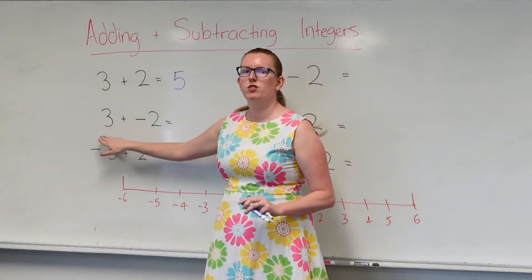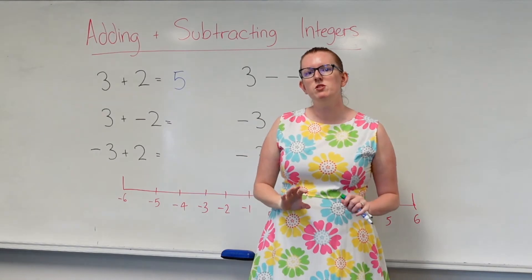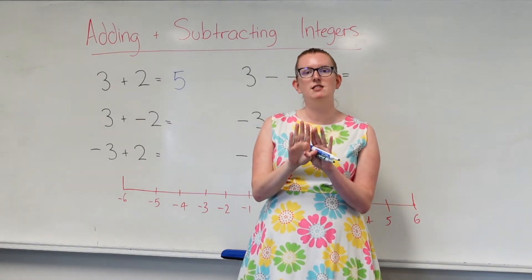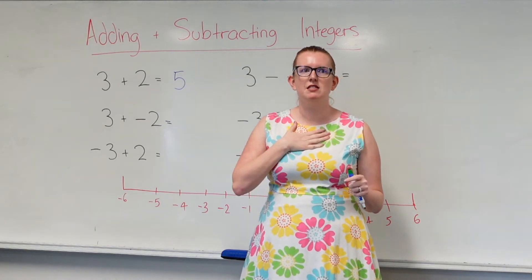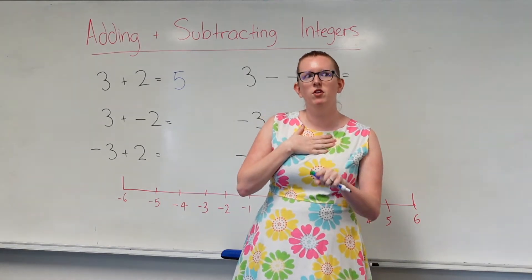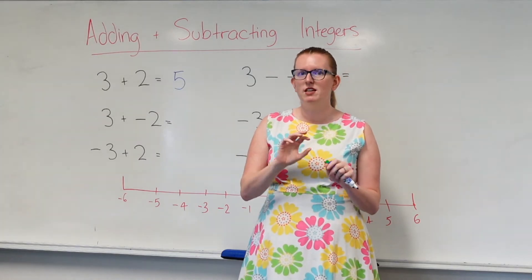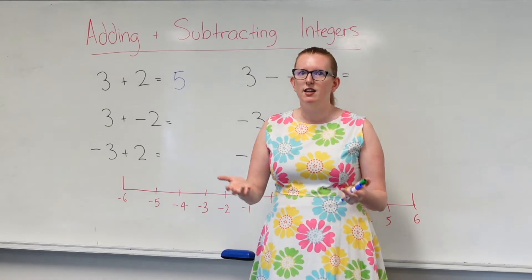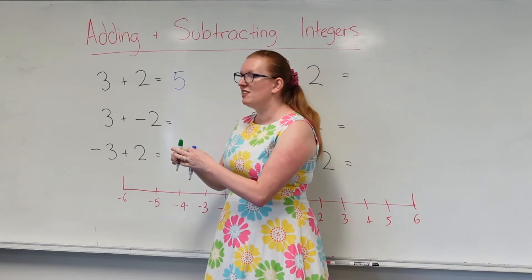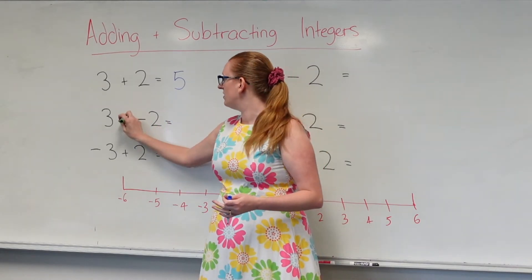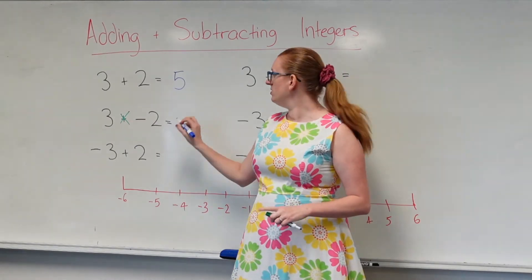Now here, I've got 3 plus minus 2. When it comes to having a positive and a negative stuck up against each other, the negative is going to win. Think of it as like if I was to say, I do not like cake. That negative in there, that not, means that I don't actually like cake. It's the same in this case. The negative is stronger than the positive, so it sort of cancels out this positive here. This just becomes 3 minus 2. So, 3 minus 2 is 1.